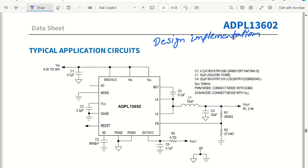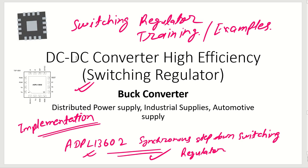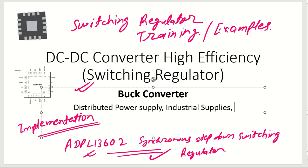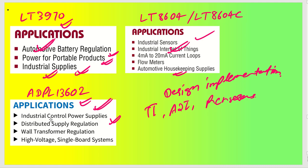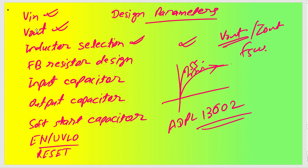Namaskar, my dear friends. We have seen the ADPL 13602 datasheet — this is a switching regulator with 2.5 ampere or 2.4 ampere output current capability. We have already seen the details of this IC datasheet and what information we need for our design. It can be utilized for distributed power supply, industrial supplies, industrial control, high-voltage single-board systems, and similar applications.